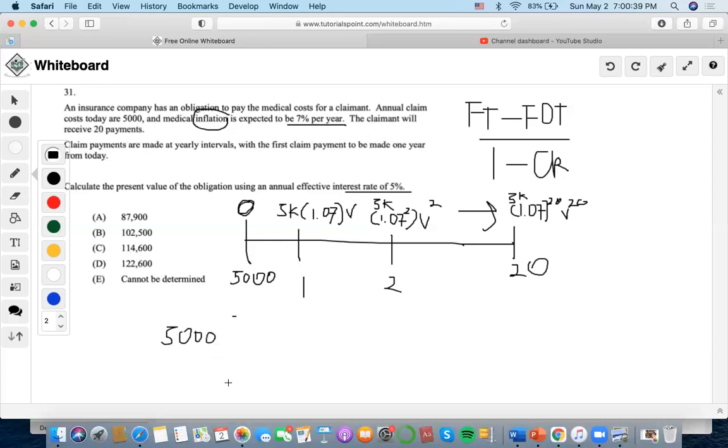We're going to say that the first term consists of 1.07v. We also see that the first omitted term, if the order continue at time 21, would be 1.07 to the 21 times v to the 21. Over that, we're going to do 1 minus the common ratio. So we know that it also happens to be 1.07v.